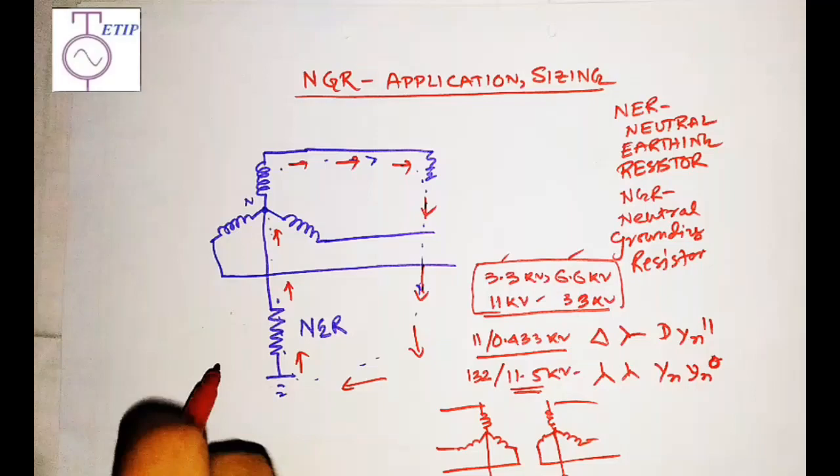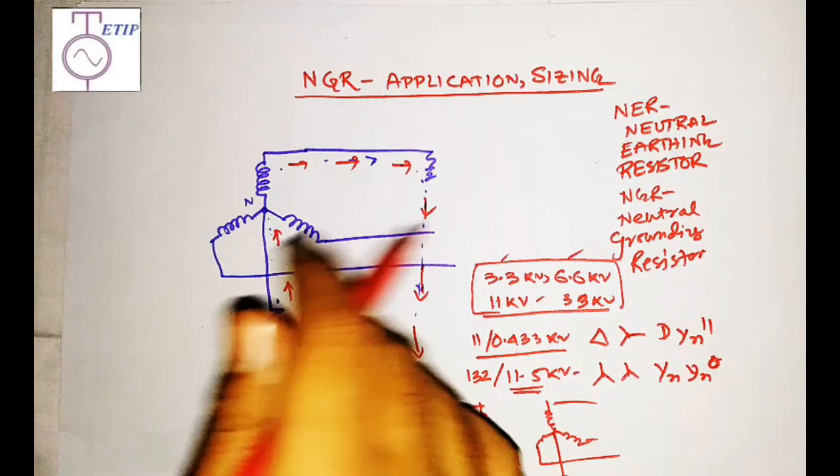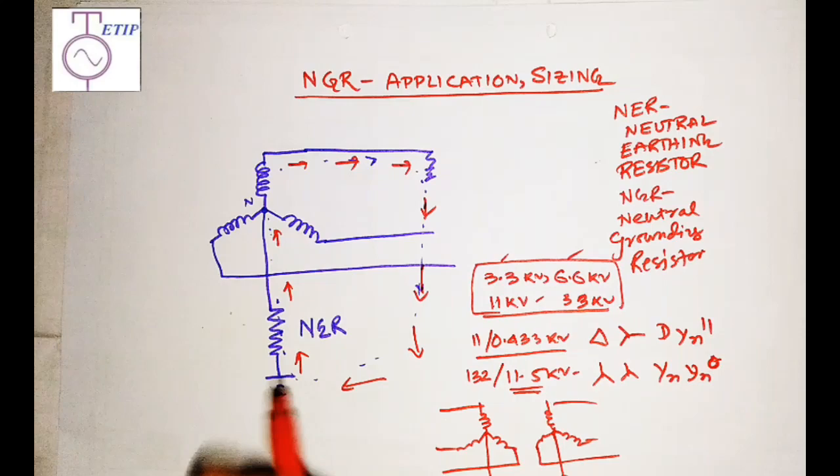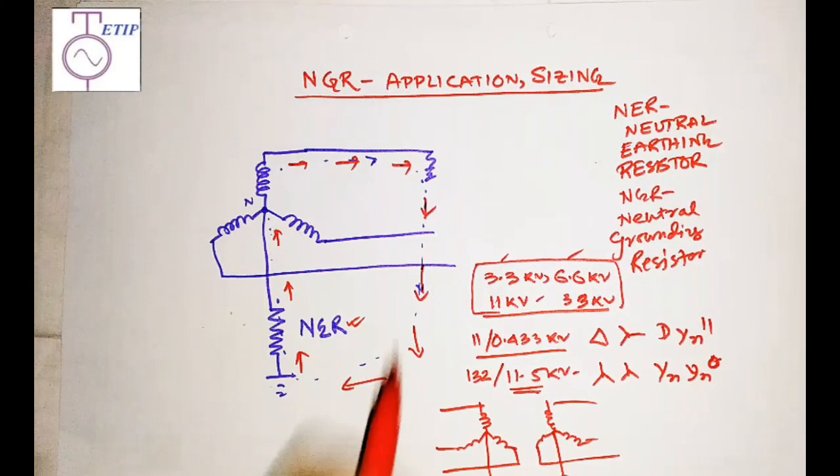Now we will see how the ohmic value of the resistance is calculated. This resistance is placed to limit the earth fault current. There are other methods to limit earth fault current, such as connecting a reactance or earth suppression coil, but NGR is the most common technique used in industry.